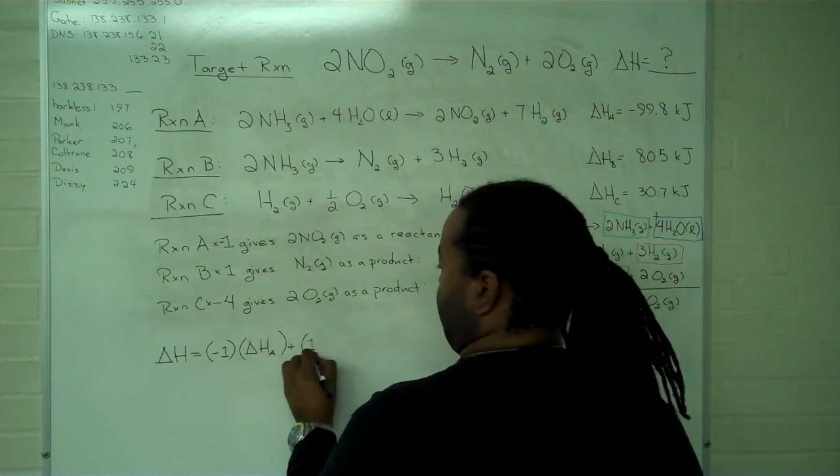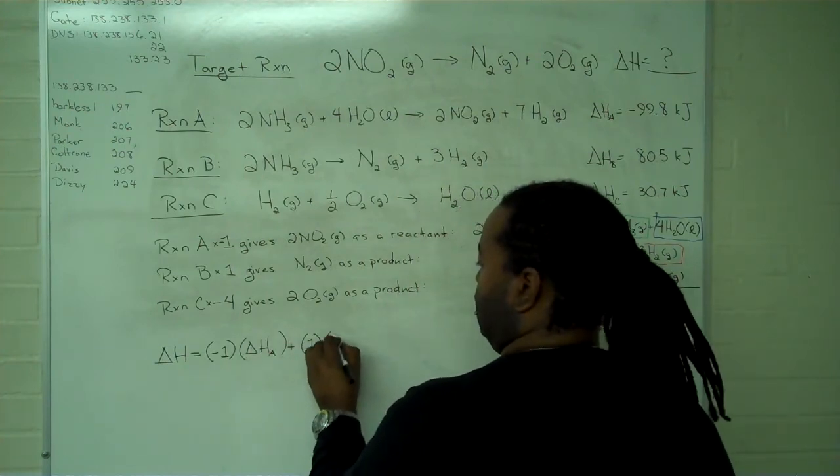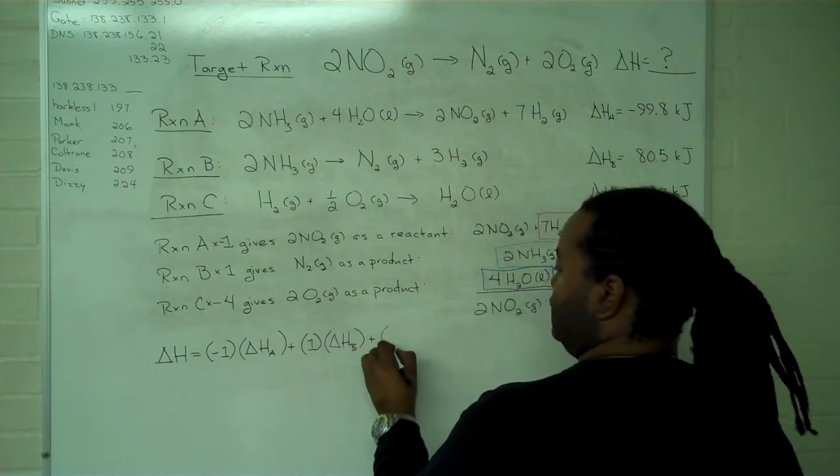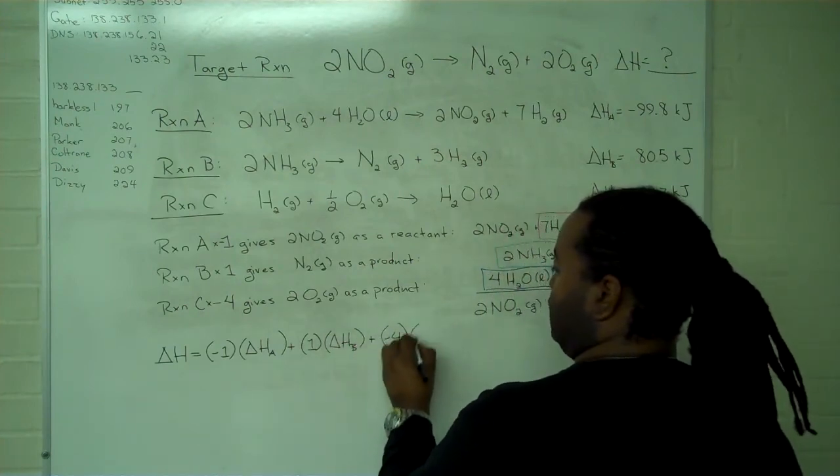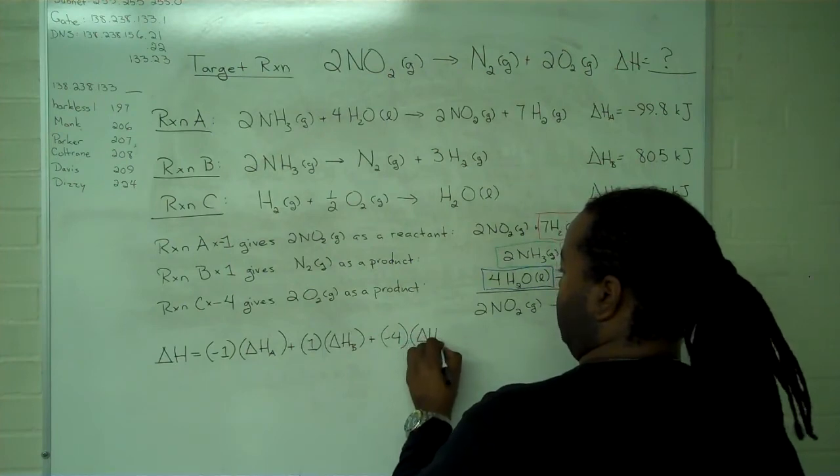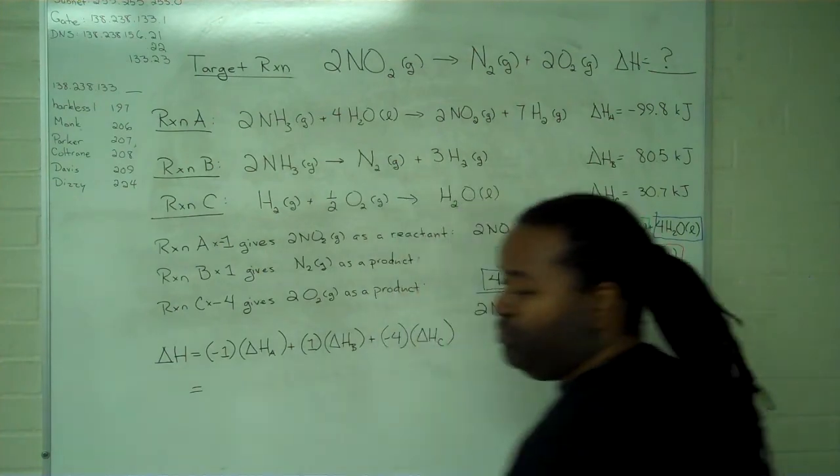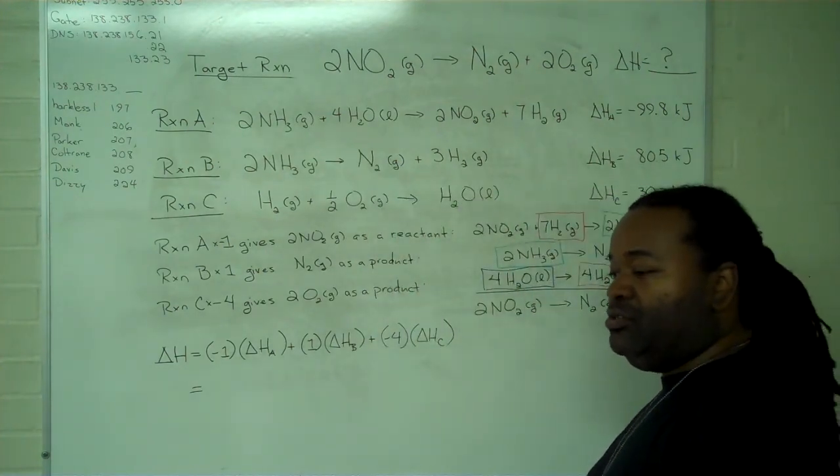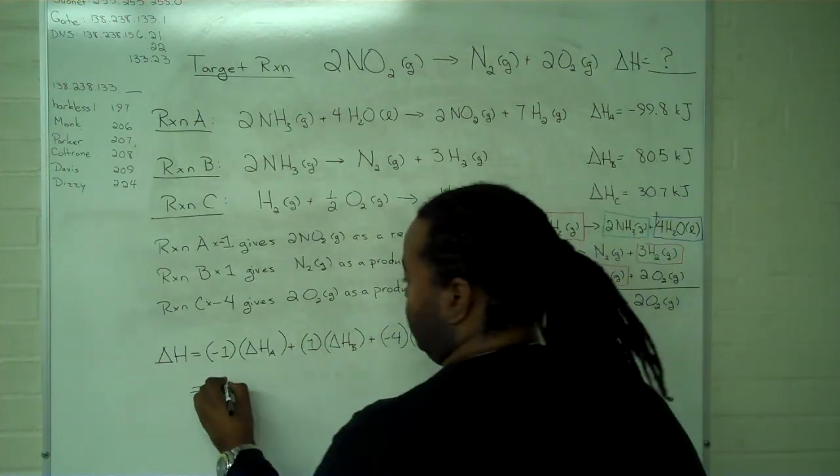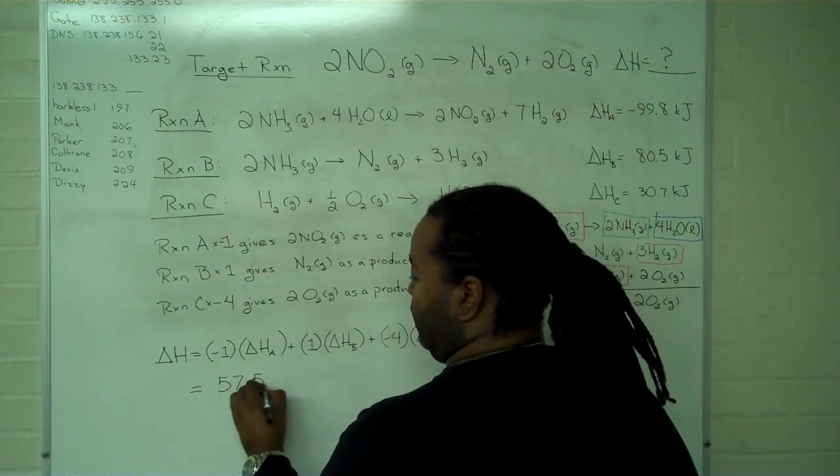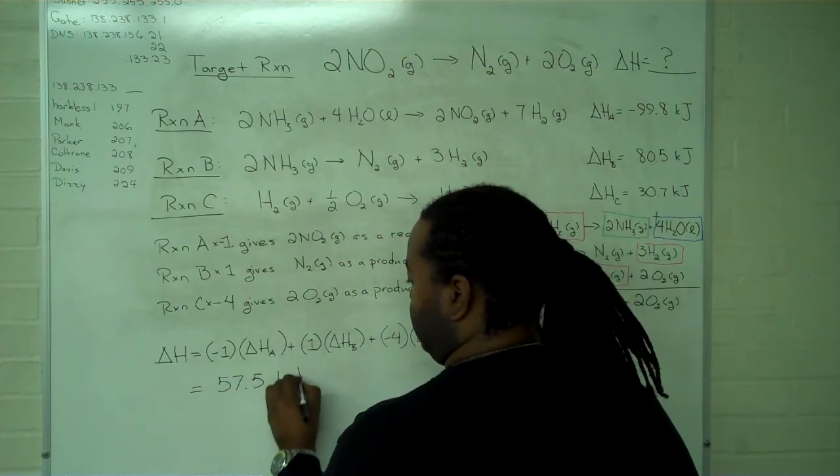Plus one times the delta H for reaction B, plus negative four times the delta H for reaction C. So with a bit of typing into your calculator, you can determine that the value for delta H for this reaction should come out to 57.5 kilojoules.